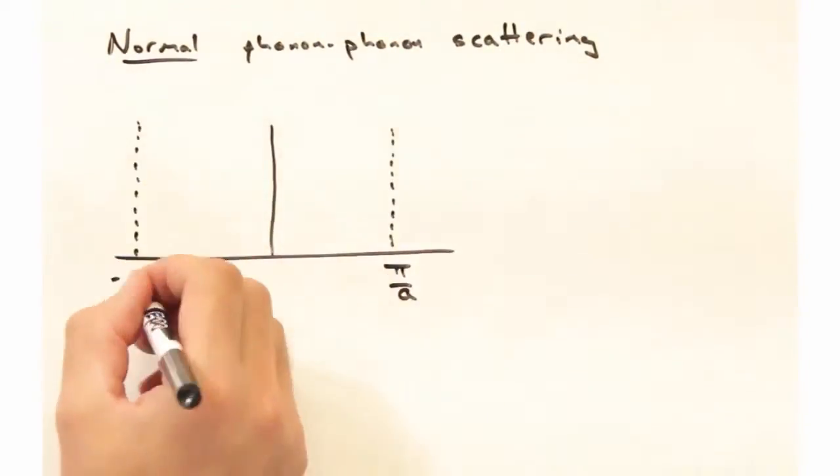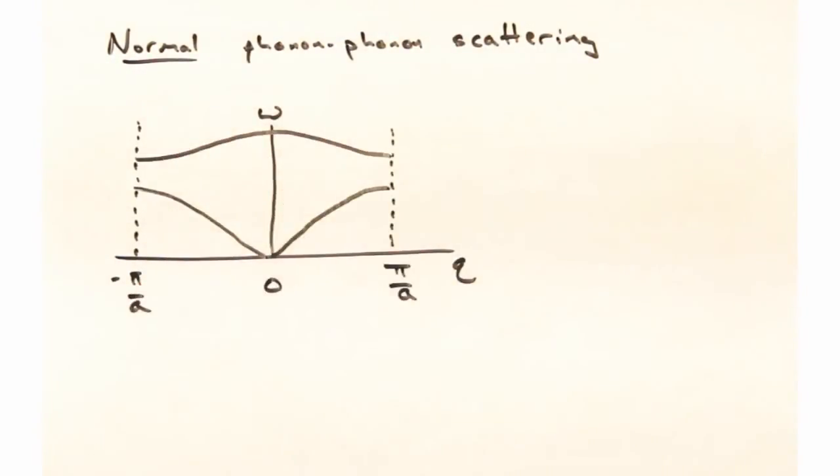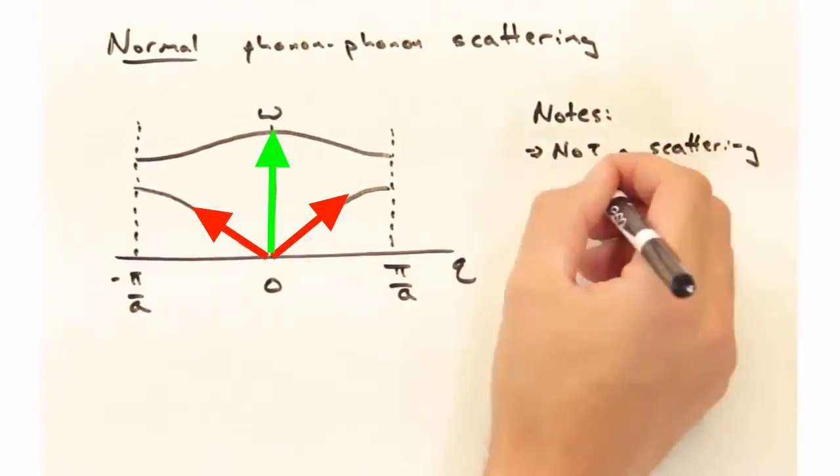With normal phonon-phonon scattering, we might have some one-dimensional dispersion, and two acoustic phonons can combine together to give me this optical phonon. There's some notes, though, that we should consider.